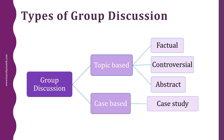Abstract topics are about intangible things. These topics are not given often for discussion, but their possibility cannot be ruled out. They test critical thinking and creativity. Some examples are: 'Smart work versus hard work,' 'There is no right way to do a wrong thing,' and 'Good things come from good thinking.'